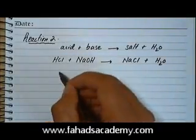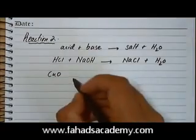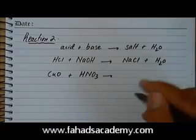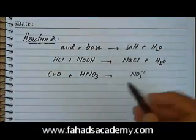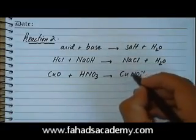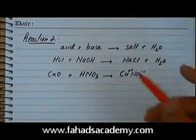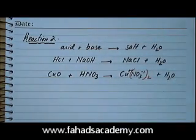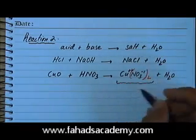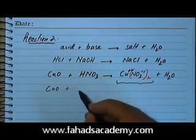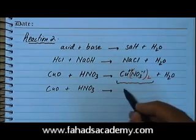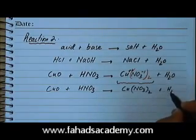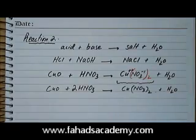Let's take another example. Copper oxide is a metal oxide and a base, reacting with nitric acid HNO₃. The salt is formed by replacing the H in the acid with the metal cation, which is copper (Cu²⁺). Since NO₃ is minus 1 and copper is plus 2, there should be two nitrate ions to balance the charges, plus a water molecule. The balanced equation is: CuO + 2HNO₃ → Cu(NO₃)₂ + H₂O.